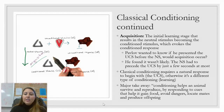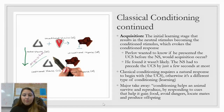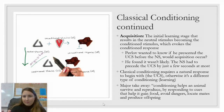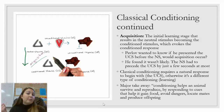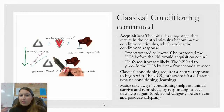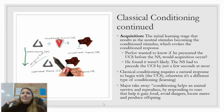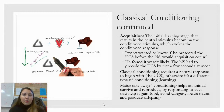The major takeaway is that conditioning helps an animal survive and reproduce by responding to cues that help it gain food, avoid dangers, locate mates, and produce offspring. Both my examples illustrate this — avoiding the yogurt kept me safe from what my brain thought was poison, and fearing birds kept me out of danger, even if that danger was only real when I was a child.